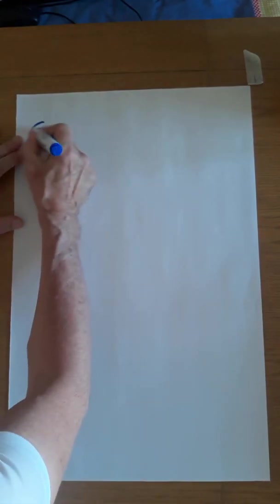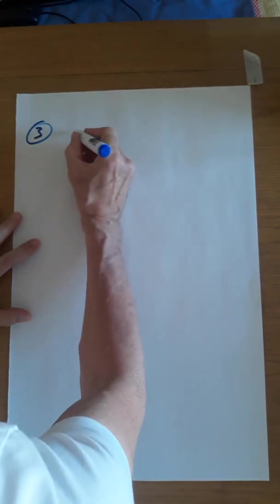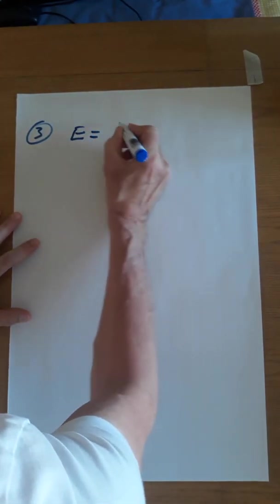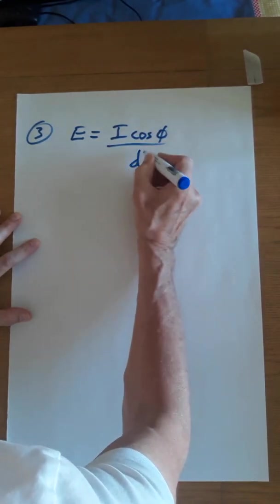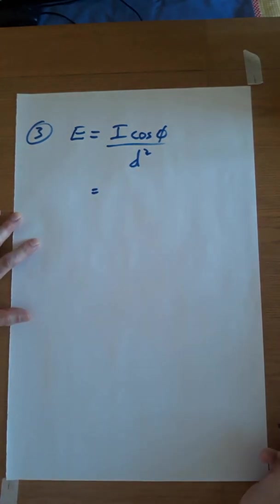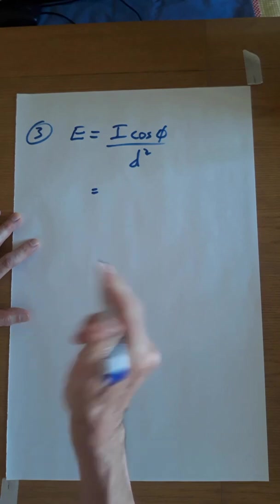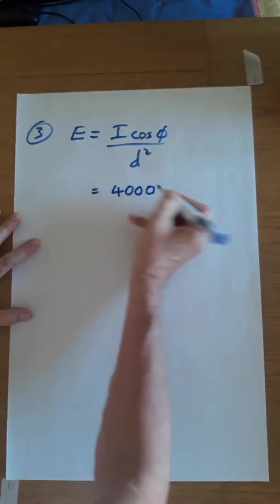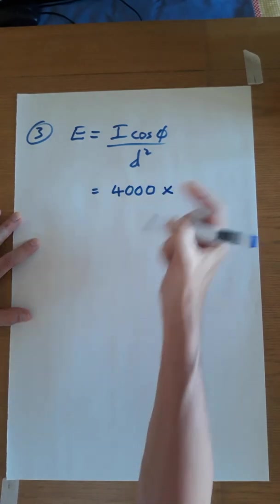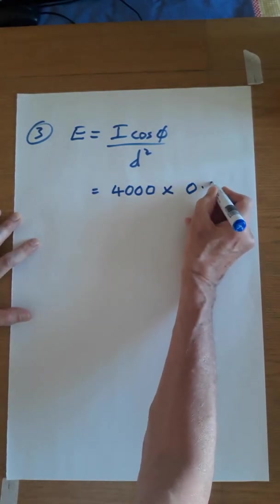So step 3. The final bit is to use the formula. Find the luminance. E equals I cos Phi over d squared. Put the numbers in that we've just been using. The brightness of the light, which isn't the correct term, but it's a good way of remembering it. So the brightness of the light is 4,000. Cos Phi, the number we just calculated, was 0.6.